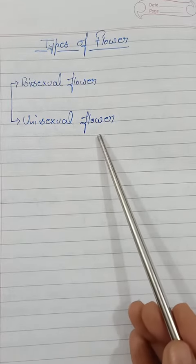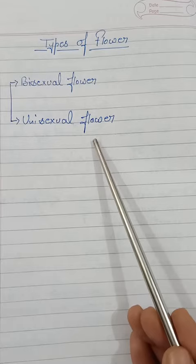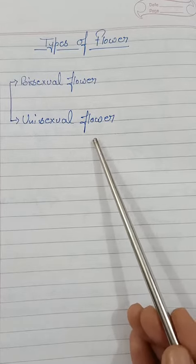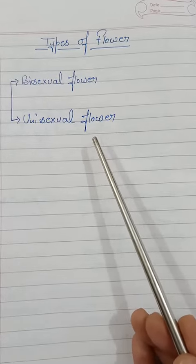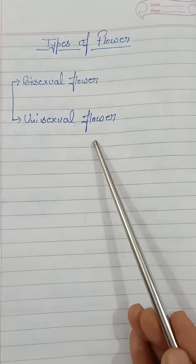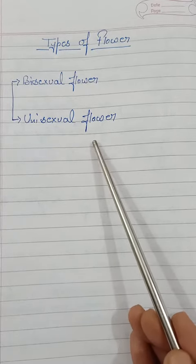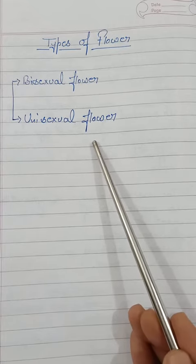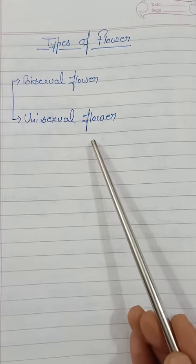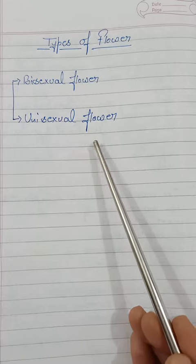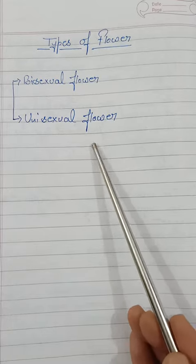Next is unisexual flower. Uni means one, sexual means reproductive. So a unisexual flower has only one reproductive part, that could be stamen or carpels. Meaning it contains either the male reproductive part or the female reproductive part.